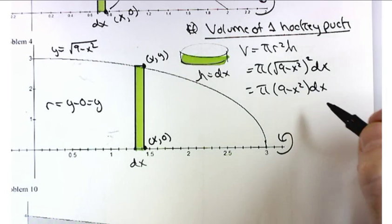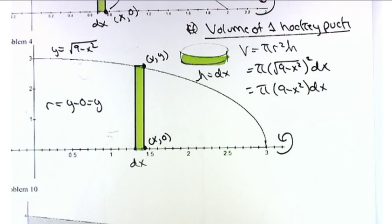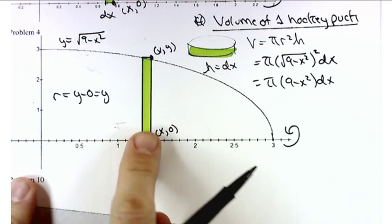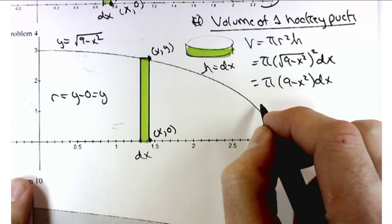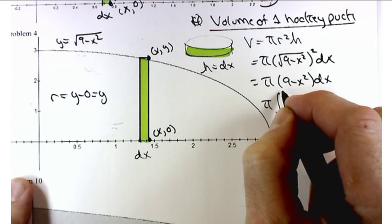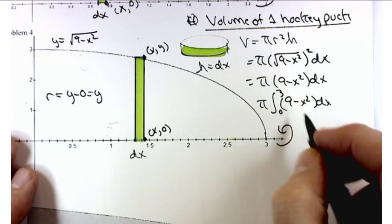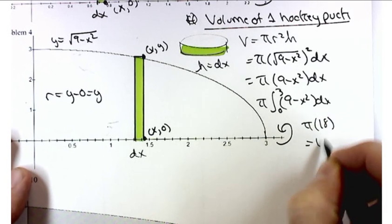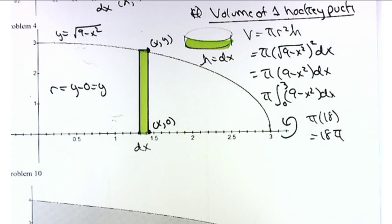That's the volume of one hockey puck. To get the total volume, integrate from 0 to 3, since the slice can go from x equals 0 to x equals 3. So we have pi times the integral from 0 to 3 of (9 minus x squared) DX, which works out to 18 pi. I'm taking a shortcut with numerical integration here, but I want to focus on the setup more than the integration itself.